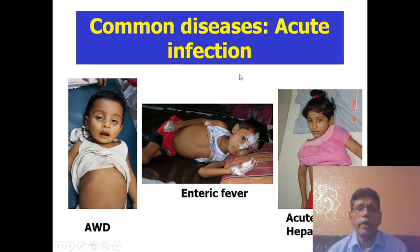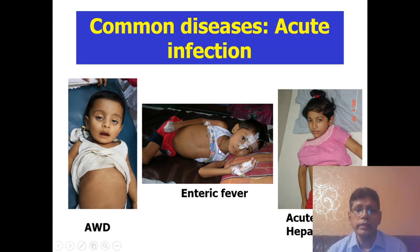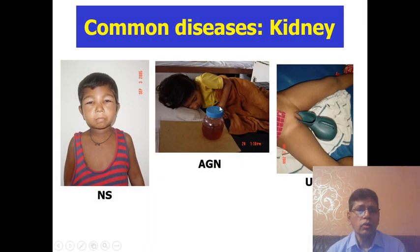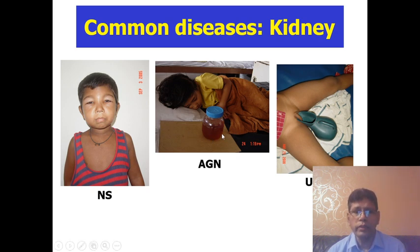Common gastrointestinal illness: acute watery diarrhea with severe dehydration — loose motions three or more times. Enteric fever — coming with fever, toxic appearance, and pain in the abdomen. Another one is acute viral hepatitis. Common renal disease: the most important is nephrotic syndrome — a child coming with swelling of the body and scanty urine, aged two to four years. In children five to 15 years with red urine, scanty urine, and high blood pressure — that is acute glomerulonephritis.